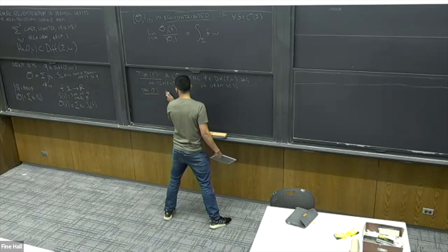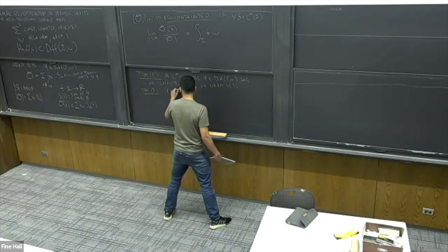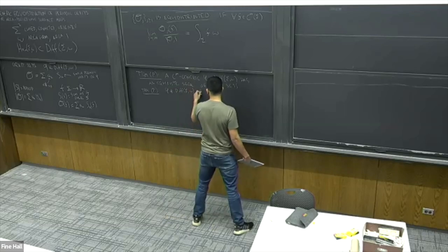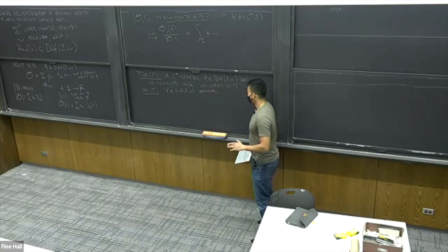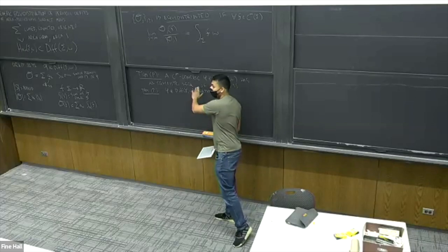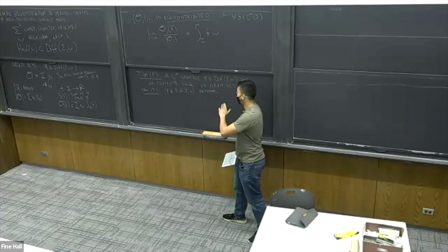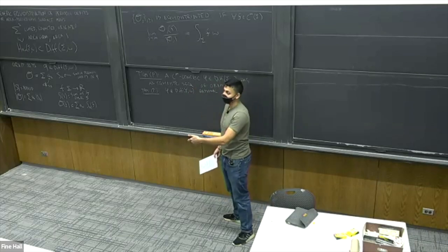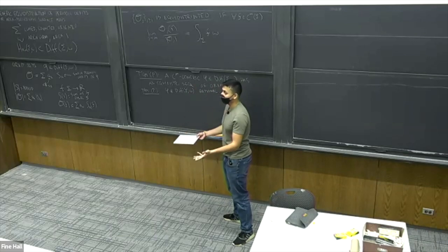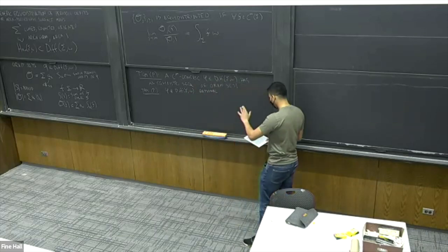The way I'm going to state this is as follows: suppose phi is a rational area-preserving diffeomorphism, which I'll define explicitly momentarily. Just as an example to keep in mind: if you take sigma to be the two-torus, then any diffeomorphism which is Hamiltonian isotopic to a rational torus rotation will be rational, and any area-preserving map Hamiltonian isotopic to an irrational rotation will not be rational. I'll give a full definition shortly.